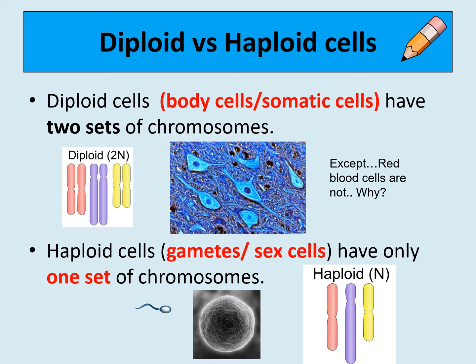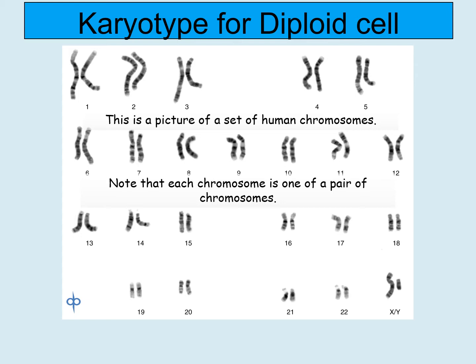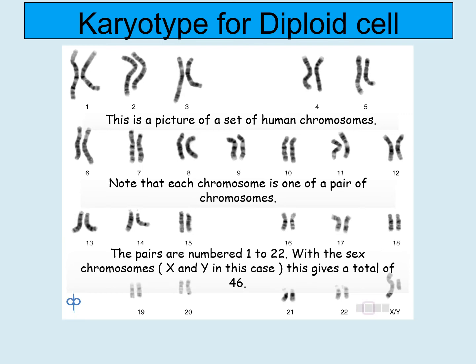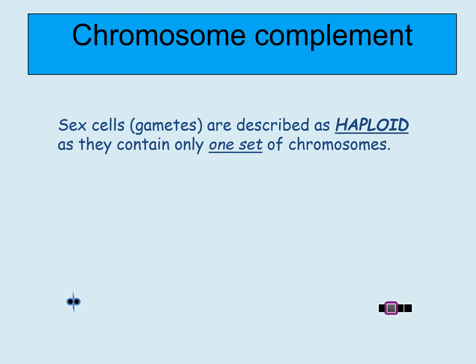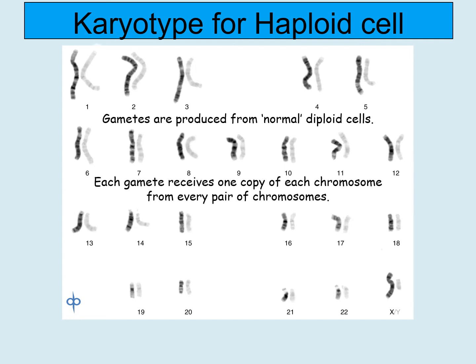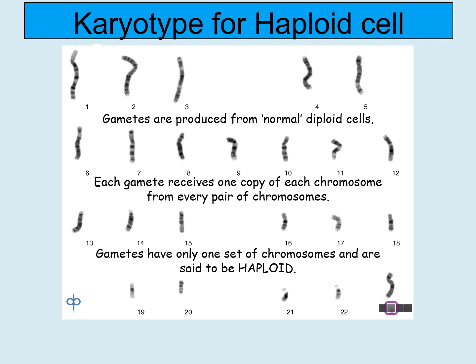Haploid cells are different. They are gametes, also known as sex cells — your sperm and your egg — and they have only one set of chromosomes. One exception is the red blood cell, which is neither diploid nor haploid because it doesn't have a nucleus and so it can't contain any chromosomes. A karyotype for a diploid cell shows 23 pairs making 46 in total. Sex cells or gametes are haploid — instead of having two pairs of 23, they only have a single set of 23 chromosomes.